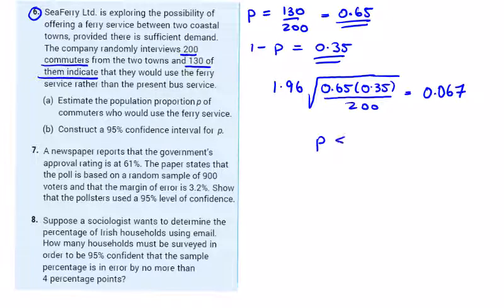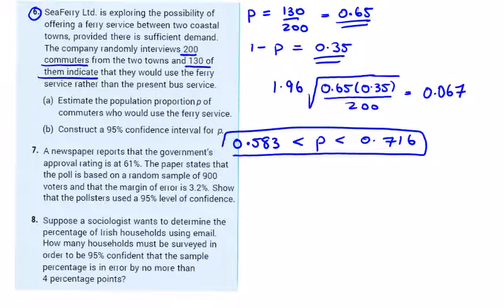I'll take 0.067. So I can say that my p, the higher end of it, I'm going to add 0.067 to 0.65 so I'm going to get 0.717. And if I take it away, I subtract 0.067 from 0.65, so I get 0.583. So I can say with 95% confidence that between 58.3% and 71.7% of people would use this ferry, and that's my confidence interval.